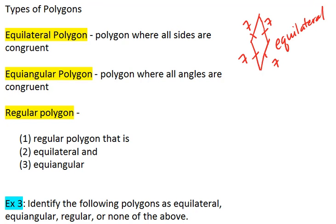An equiangular polygon is a polygon where all angles are congruent. So if we have a shape and the angles are given the same congruency mark, or they are given the same angle measure, we know that our polygon is equiangular.